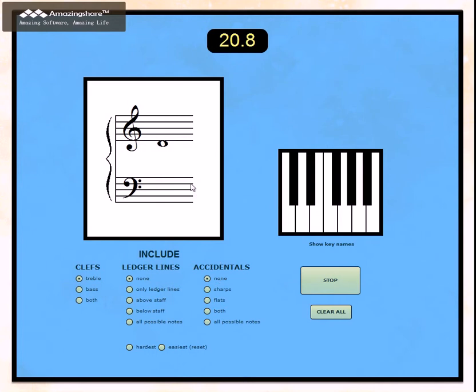So I also have these hardest and easiest buttons here. If I have different settings here and I hit the hardest button, then it shifts it to the most difficult setting that there possibly could be. And then I can hit the easiest button and it will shift it to the easiest.